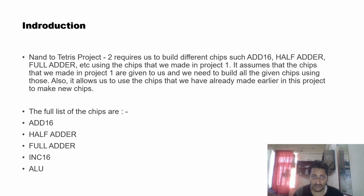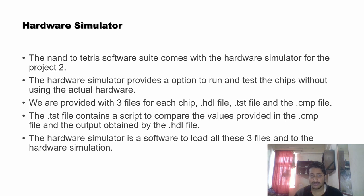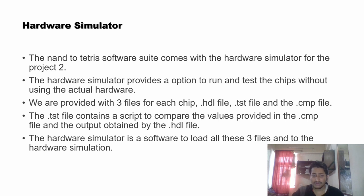NAND to Tetris Project 2 requires us to build different chips like the Add16, half adder, full adder, etc., using the chips made in Project 1. It also assumes that basic chips like the NAND gate and the D flip-flop are already given. Here is the full list of chips. The hardware simulator is a software that provides an option to run and test chips without actual hardware. We have three files: the HDL file, the TST file, and the compare file. We load the TST file, which in turn loads the HDL file and the compare file, and compares the HDL output with the comparison file.